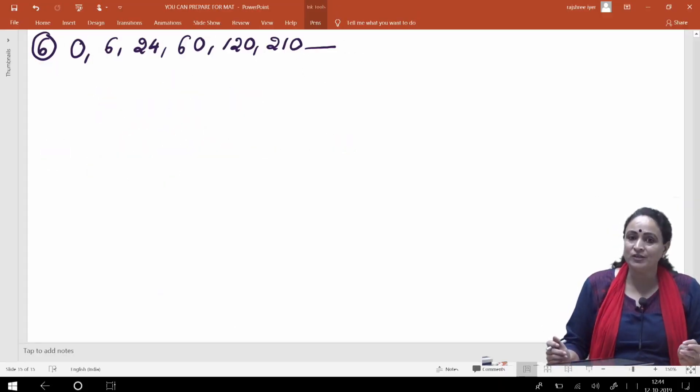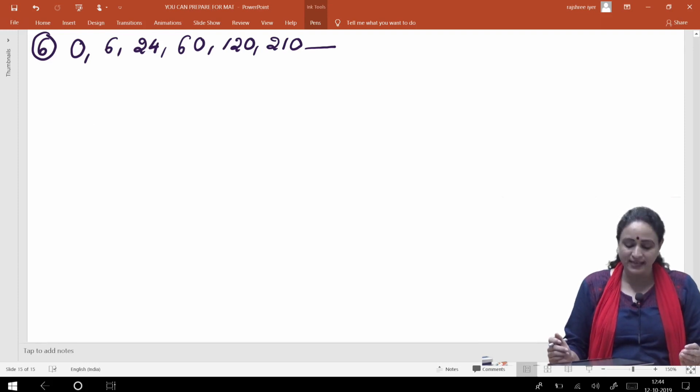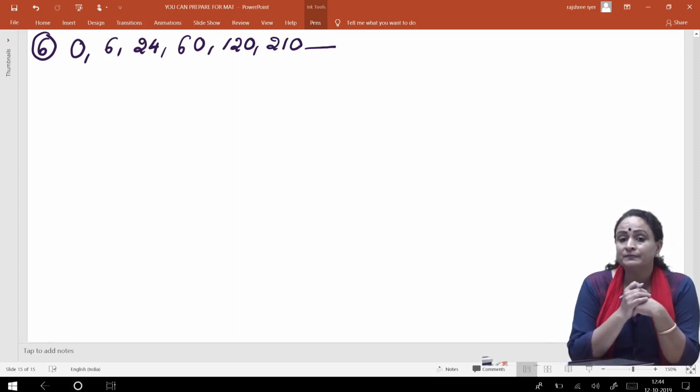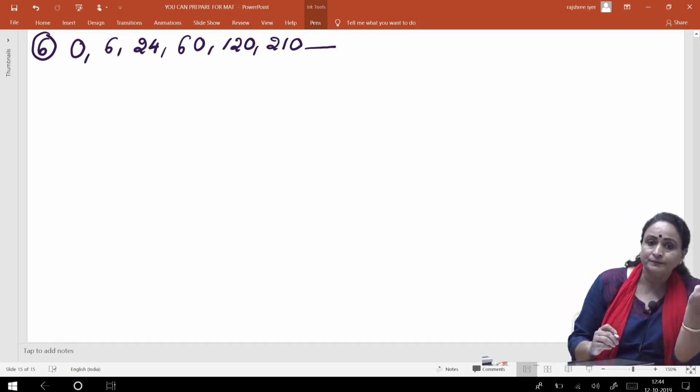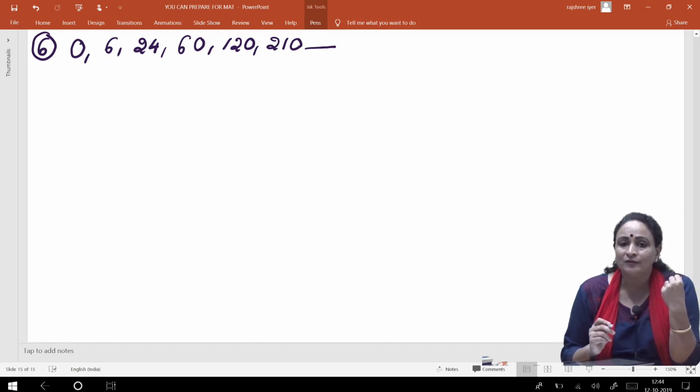So, chaliye sixth question karte hain, aur sixth question mein hamare paas jo series aayi hai saamne, that is 0, 0 ke baad 6, 24, 60, 120, 210, and then dash. Chaliye kya hona chahiye, agla number last wala ho? Socho, pattern socho. Pause karo video ko, aapne aap koshish karo. Okay. So, socha aapne kuch mila ho? Okay, good.